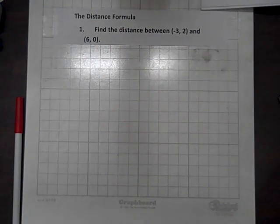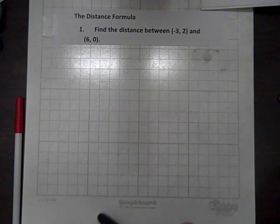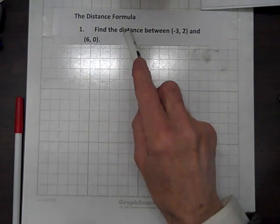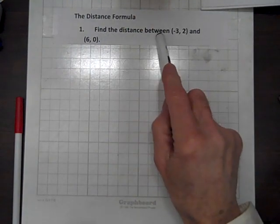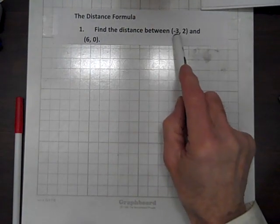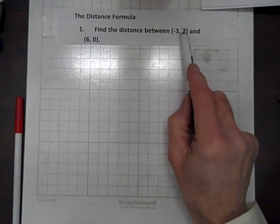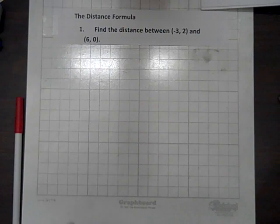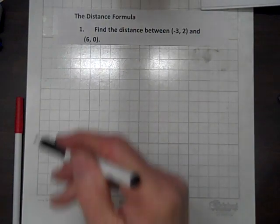We have three distance formula problems to resolve. The first one is: find the distance between the ordered pair negative three, two and the ordered pair six, zero.